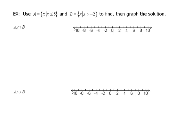So they've given you that set A is the set of x's such that x is less than or equal to 5. So this would be all of the numbers 5 and smaller.